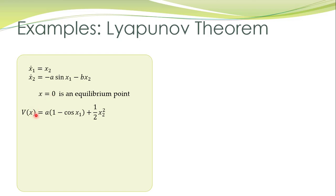We take some function and ask: is it a positive definite function? V of 0 — if we substitute X equal to 0 — this term is 0, cosine of 0 is 1, so this term is also 0, so V of 0 is 0. For all other values of X it will be positive. Cosine of X1 is always less than or equal to 1, equal to 1 only for X equal to 0, so if X is not equal to 0 this is always positive. This function is positive definite.